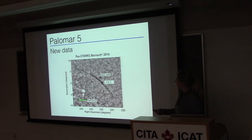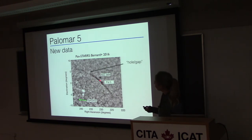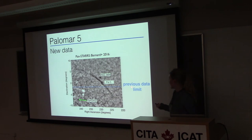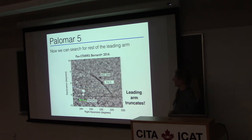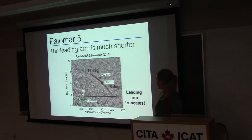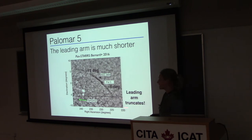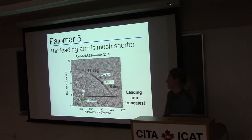Last year, PanSTARRS came out mapping the region that hadn't been explored before for Palomar 5. SDSS had previously only mapped the stream to a certain extent, so no one had actually looked in that region for Palomar 5 stream members. What's surprising is that they actually found that the leading arm truncates — the leading arm is a lot shorter than the trailing arm. No one had really thought this would be the case. You could imagine a giant subhalo plowing through here, but that would almost reach the mass limit where we'd expect that subhalo to have stars, so something else might be needed.